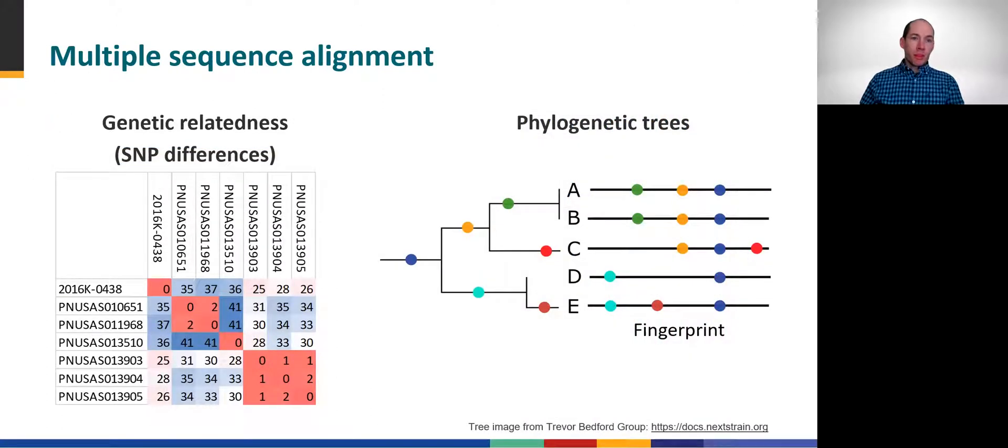For example, here on the left we see a matrix of genetic relatedness calculated from an MSA. Typically, these are reported as SNP distances or the number of SNP differences between strains. So each of the numbers in this table indicates the number of sequence mutations, SNPs, that differentiate two strains.